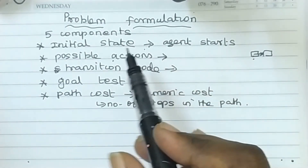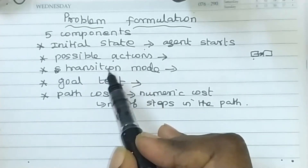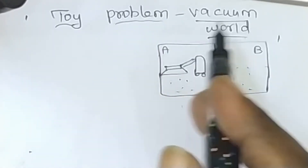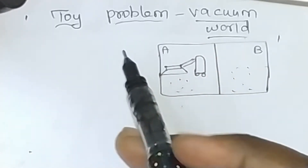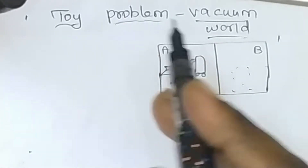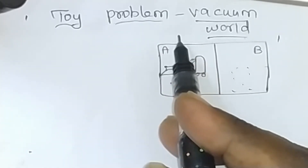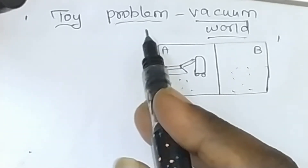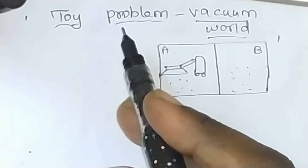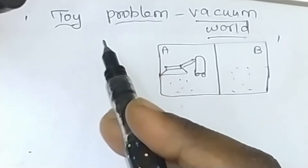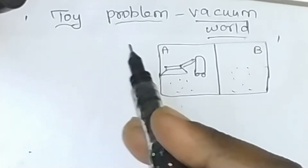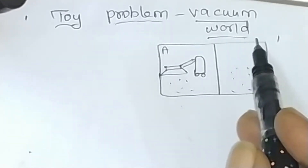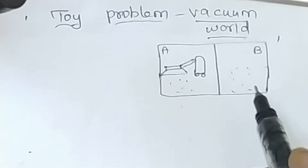So the five major components of a problem are: initial state, possible actions, transition model, goal test, and path cost. A problem-solving agent formulates these five components. Let's now see a toy problem from the previous concept to understand how the problem-solving agent formulates this.